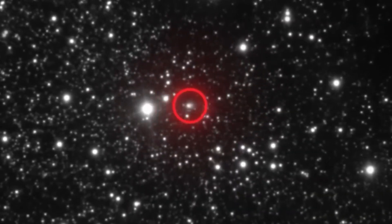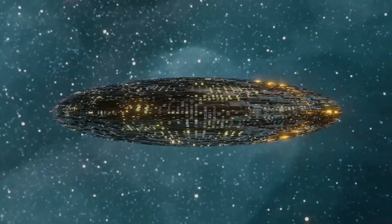Some say it's just another comet. Others think it might be something far more extraordinary, with zero meaning it's a natural object like a comet for sure, and ten meaning it's definitely a technological object.